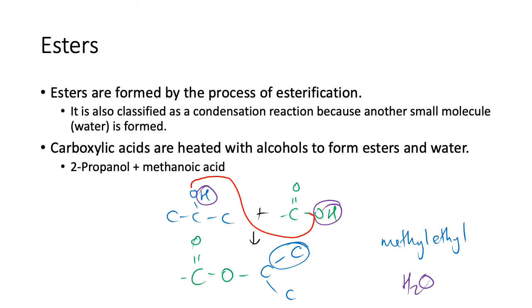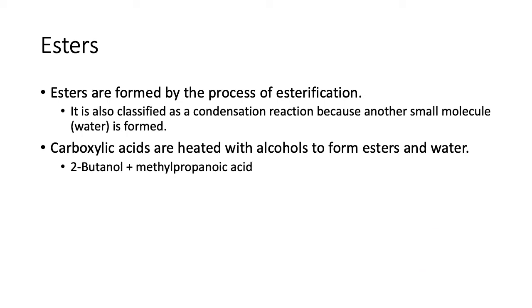Methyl ethyl for that part, and methanoate for the carboxylic acid part — methyl ethyl methanoate — plus water. When you have a secondary alcohol, you have to think about where the alcohol group is. Whichever carbon the alcohol group is attached to, that's the carbon that attaches to the carboxylic acid to make the ester. For example, try 2-butanol and methylpropanoic acid.